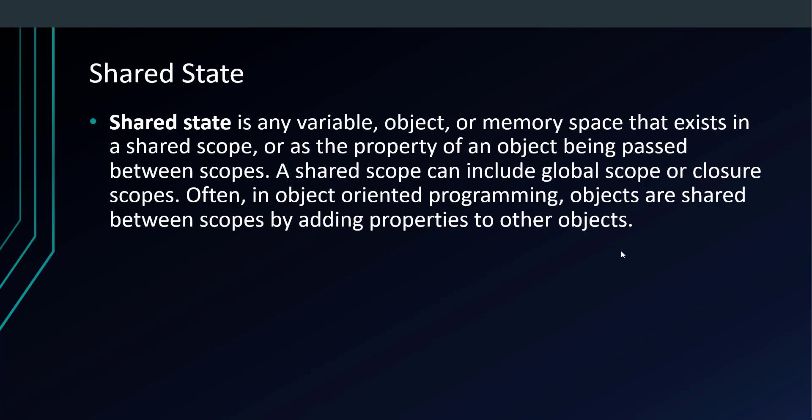Objects are shared between scopes by adding properties to other objects. For example, a computer game might have a master game object with characters and game items stored as properties owned by that object. Functional programming avoids shared state instead of relying on immutable data structures and pure calculations to derive new data from existing data. The problem with shared state is that in order to understand the effects of a function, you have to know the entire history of every shared variable that a function uses or affects.